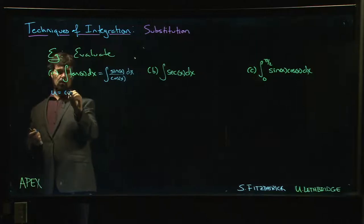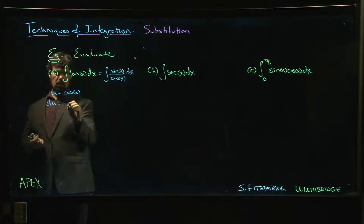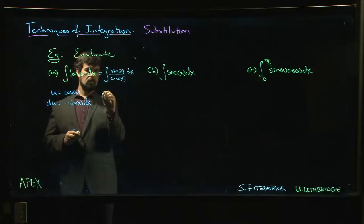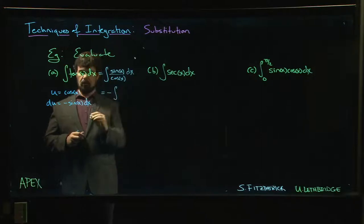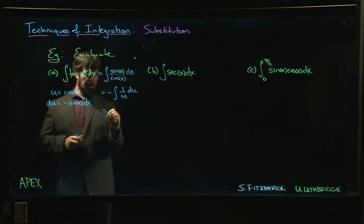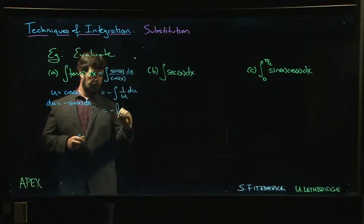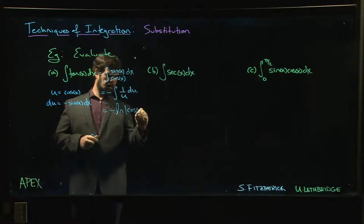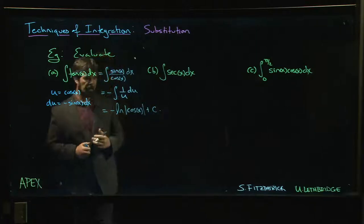So let's try letting u equal cos x, then du is minus sin x times dx. This becomes minus the integral of 1 over u times du. We've seen that one plenty of times, right? This is minus the natural log of the absolute value of cos x plus a constant.